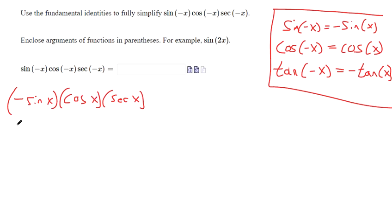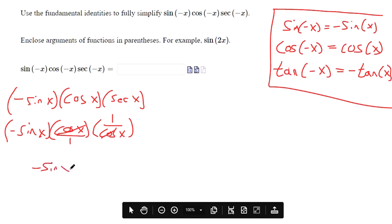And now to simplify this a little bit further, nothing we can do with the first two. Those don't do any sort of cross canceling business. But look, cosine and secant are reciprocals, right? So you could rewrite secant as one over cosine of x. That's the definition. That's one way we can define secant as the reciprocal of cosine. And now if you were to multiply these, put a little one under here, these are going to cross cancel. So you're just left with negative sine of x.